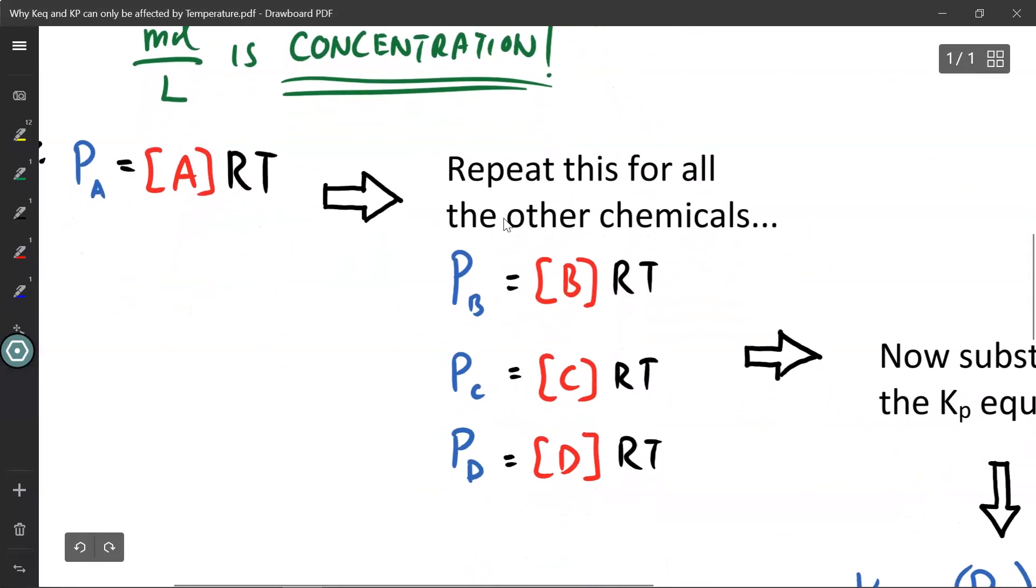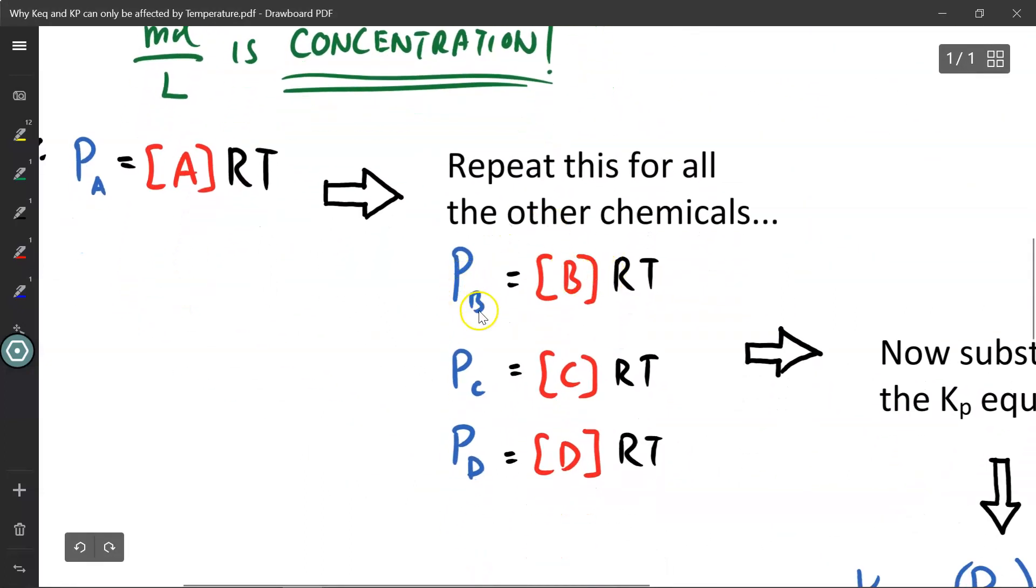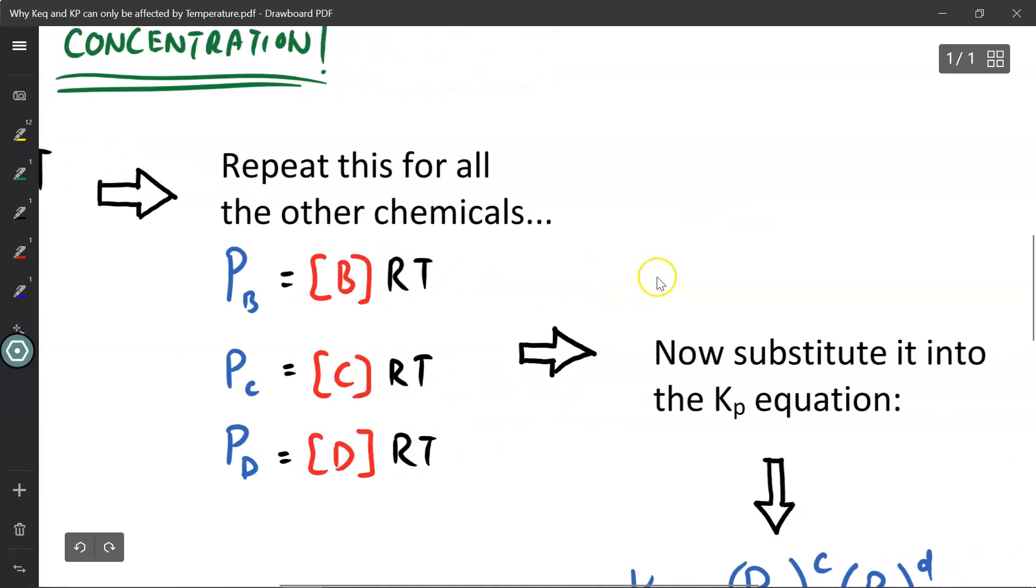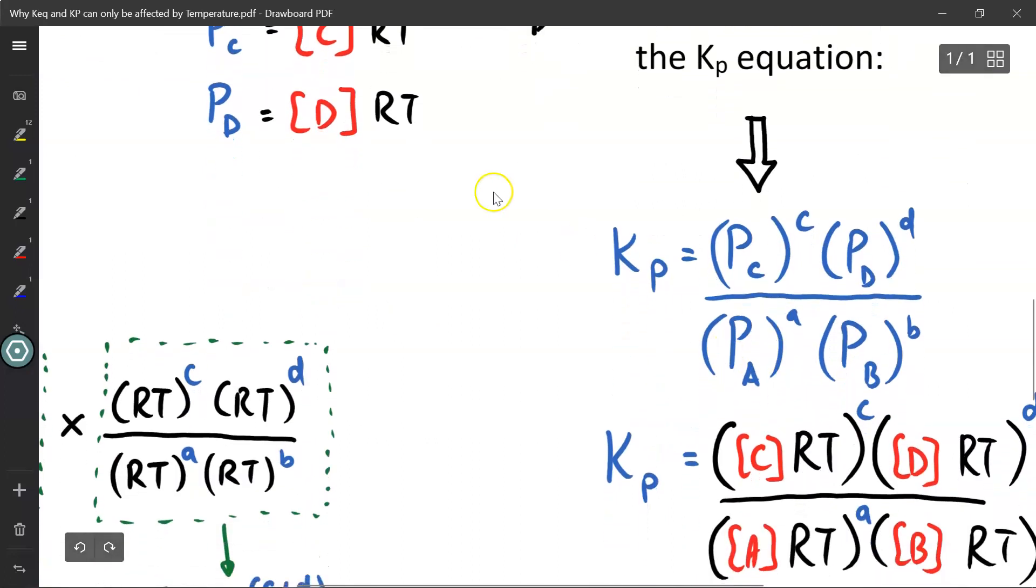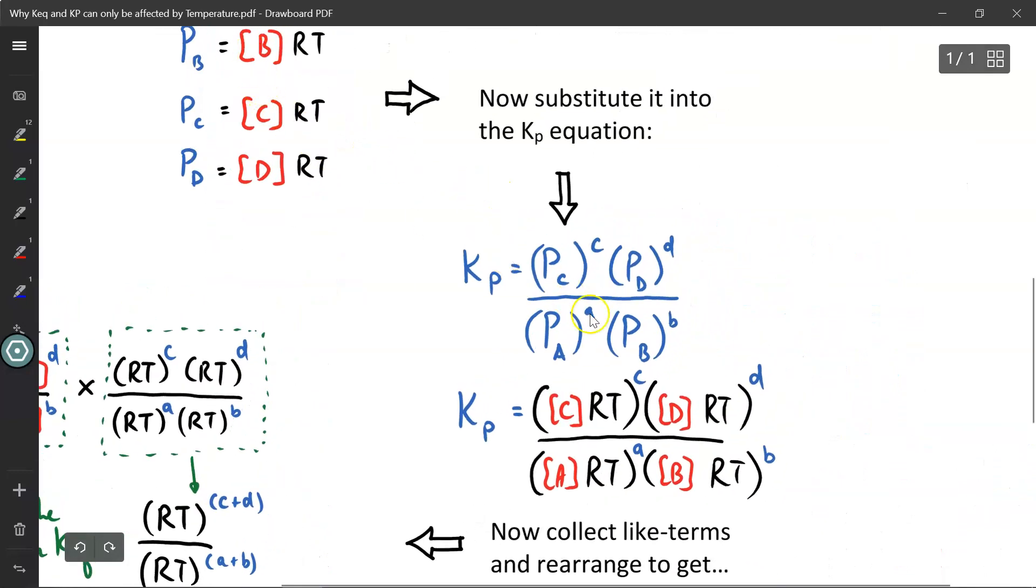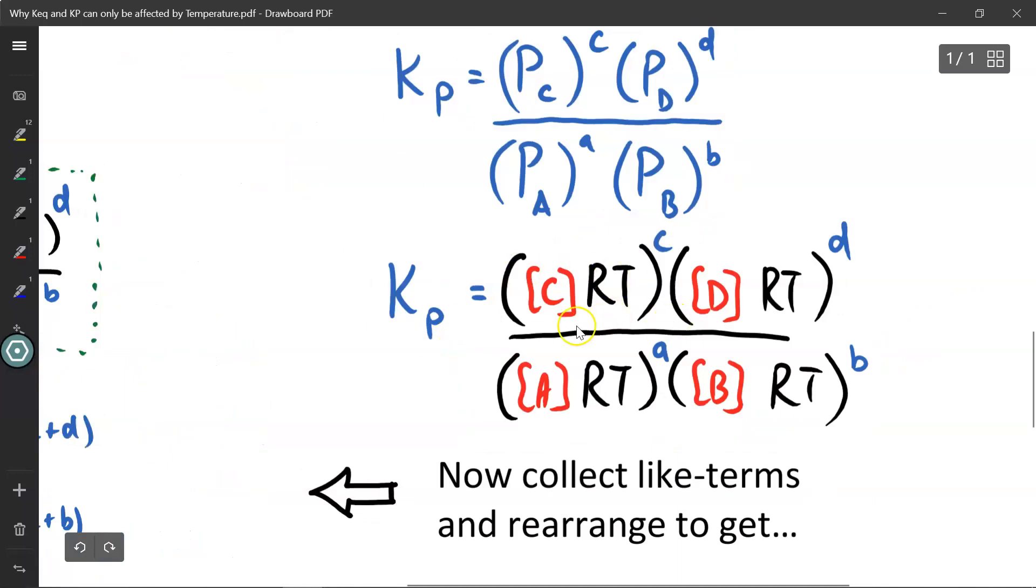If I repeat this for all the other chemicals, therefore the pressure of B is concentration of B times RT, pressure of C, concentration of C times RT, etc. From there, I can just plug it in to my original equilibrium expression for pressure, where Kp is equal to Pc, as you can see over here. If I start substituting all these values in to where they belong, we get this ugly mass of numbers, or variables.